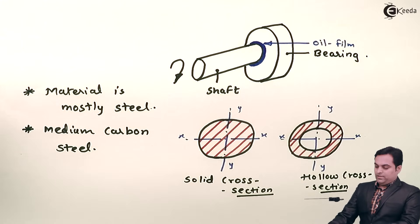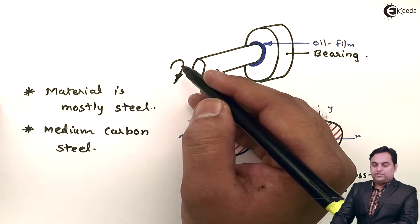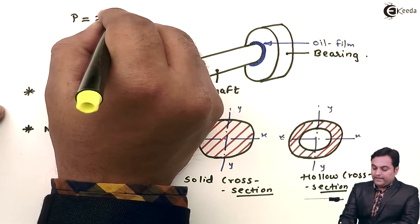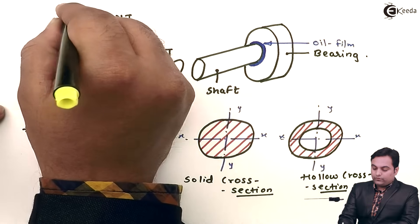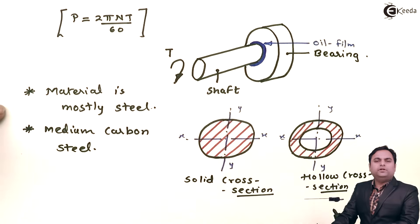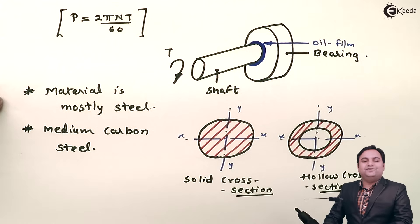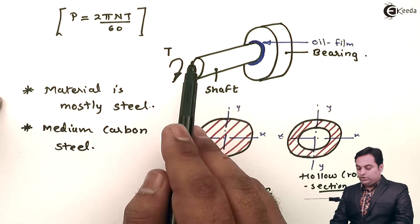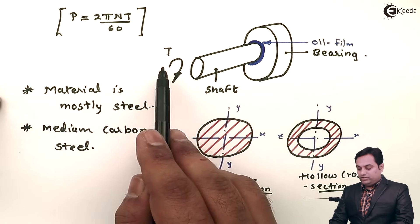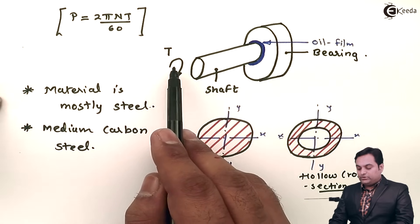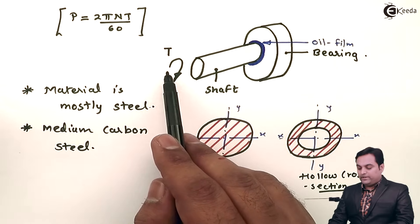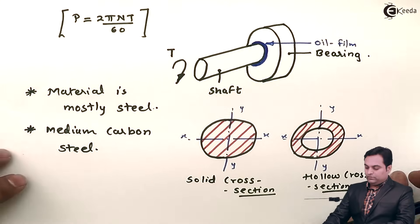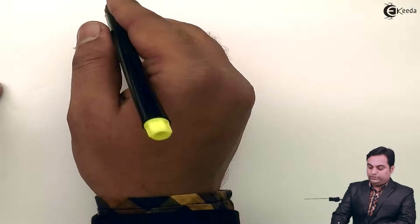When the shaft rotates, we are providing torque. Since power equals 2πNT divided by 60, the power consumed or transmitted by the shaft can be found using this formula. As we can see, power and torque are directly proportional, so this torque — that is, the rotation — produces power, or the shaft consumes this power.